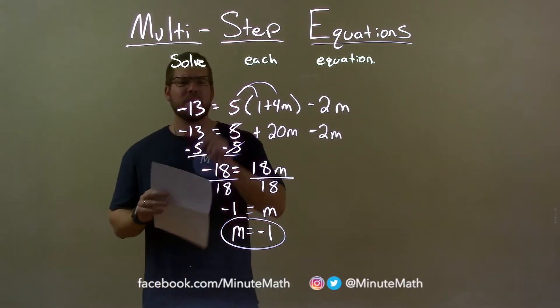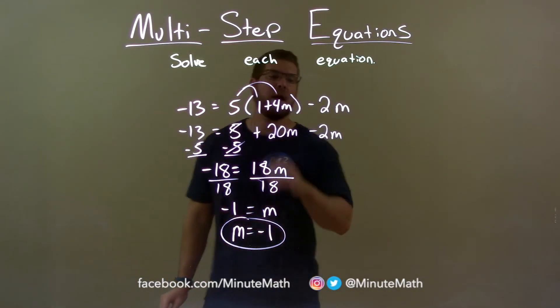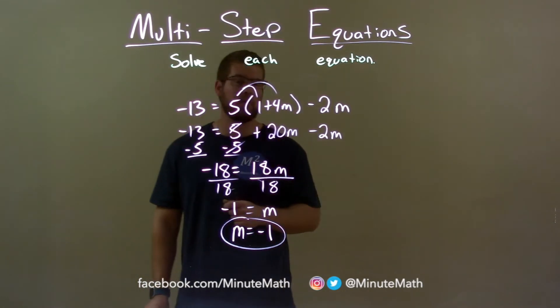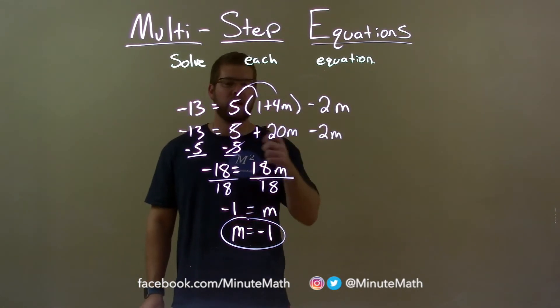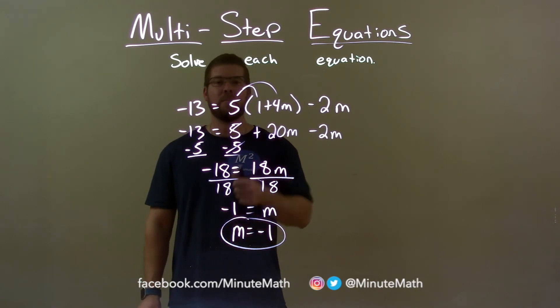Quick recap, we're given negative 13 equals 5 times 1 plus 4m minus 2m and we can solve for m. I distributed the 5, then I combined my like terms, then I divided both sides by 18, got m by itself equal to our final answer, negative 1.